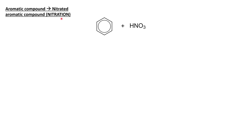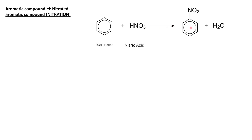Let's begin by looking at nitration of aromatic compounds. Nitration means to put an NO2 group on something, and that's done by taking benzene, an aromatic compound, and reacting it with nitric acid. The benzene reacts with the nitric acid and we get a nitro group on the benzene ring — we call this nitrobenzene. We'll also get water as a by-product from this reaction.